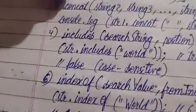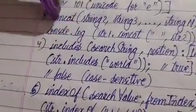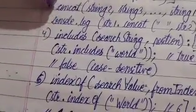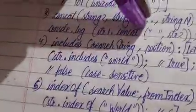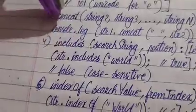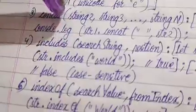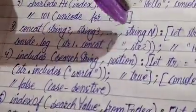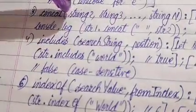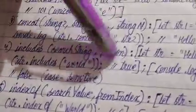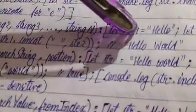In this video let us cover some more string methods. One is concat, and this is a method which is used by a string. It is going to take these many strings — string2, string3, and so on. String1 is the string which is going to use this concat method. Let me read what concat does and show some examples.